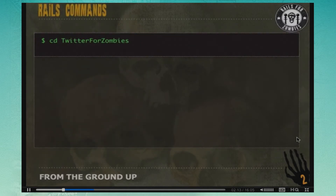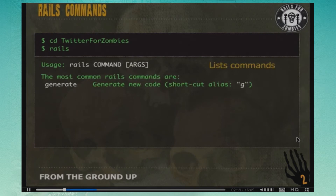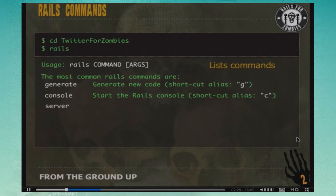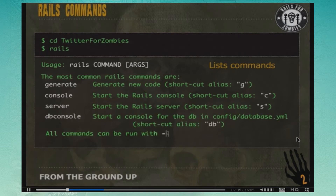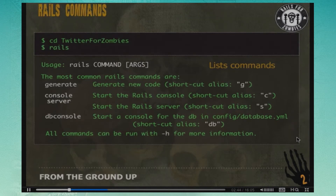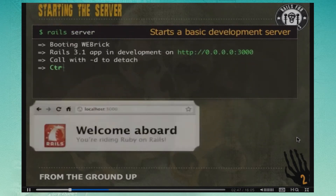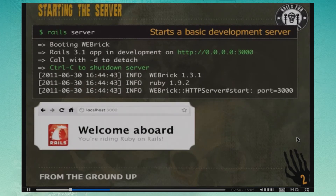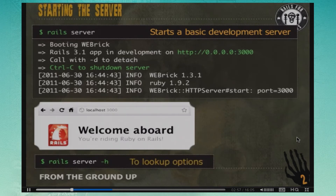Now let's jump into the directory by running cd, and if we run Rails from inside the directory we get a list of commands: the generate command to generate new code, the console command to debug, the server command to start our local development server, and the dbconsole command to jump into a database console. We can run any of these with the -h option for more info. Let's get our development server running with 'rails server' — if we go to localhost:3000 we get the welcome to Rails screen. The shortcut is just 'rails s'.